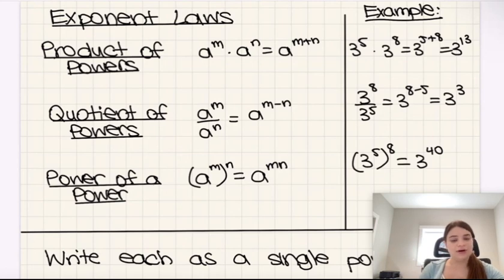So it's important to be able to distinguish. I think a lot of people get the product of powers mixed up with power of a power. When we have power of a power, that's when we multiply. When we're multiplying and finding the product of two powers, that's when we add those exponents.